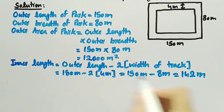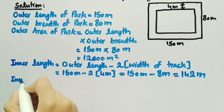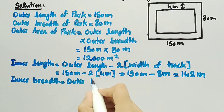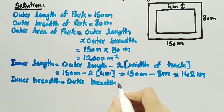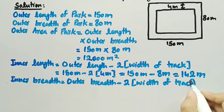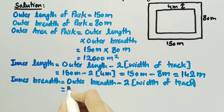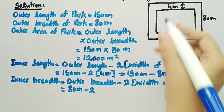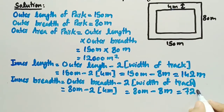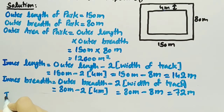Now we will find the inner breadth of the park, which is equal to outer breadth minus 2 times the width of track. That is 80 meter minus 2 times 4 meter, which equals 80 meter minus 8 meter, equal to 72 meter. So the inner breadth of the park is 72 meter.